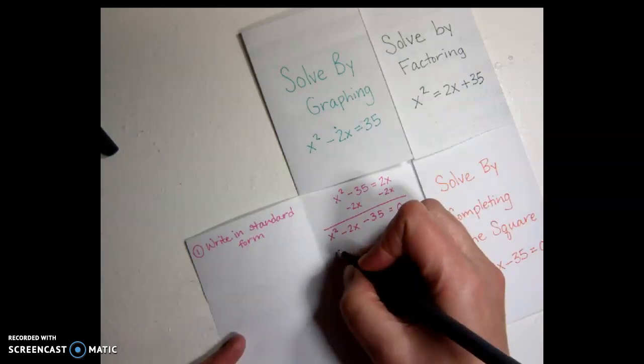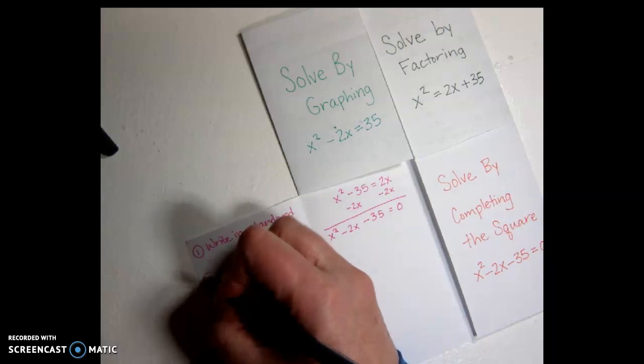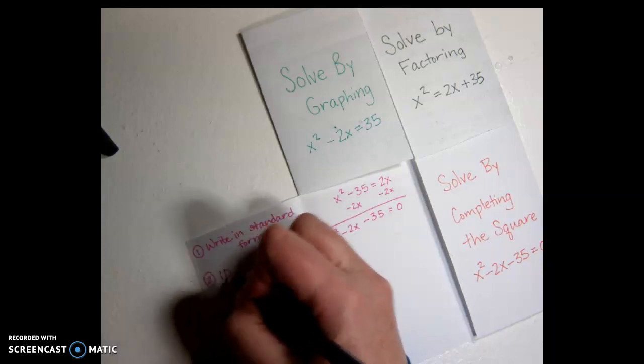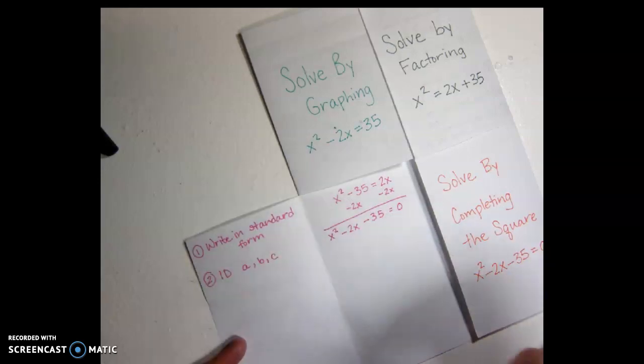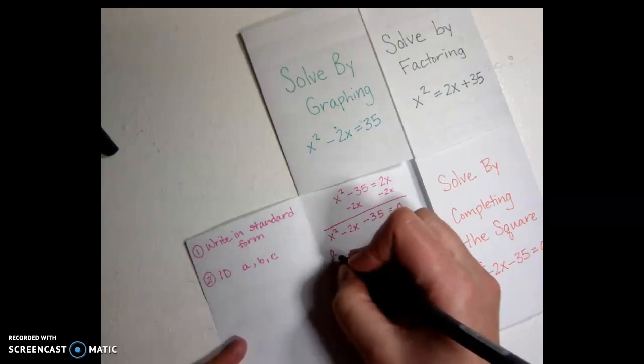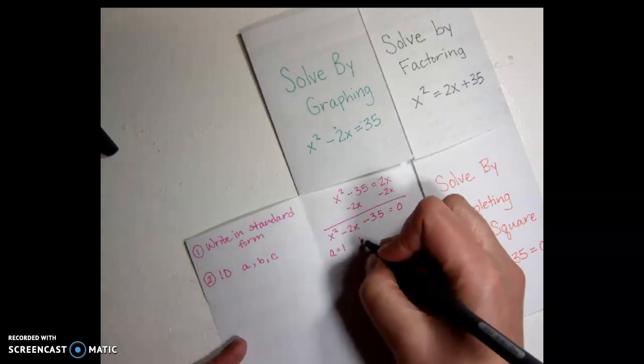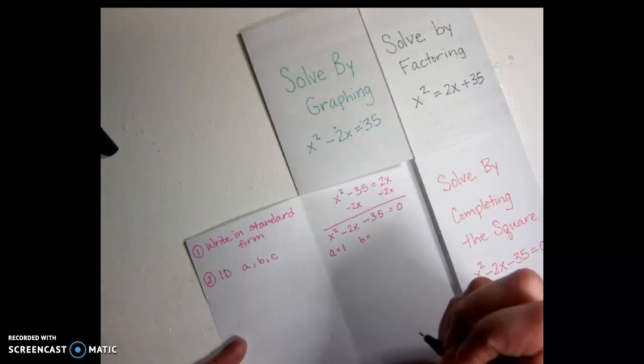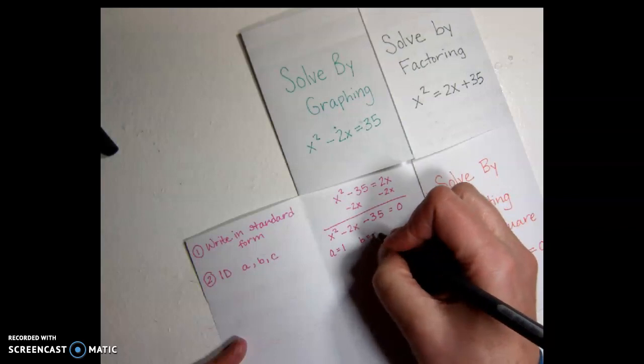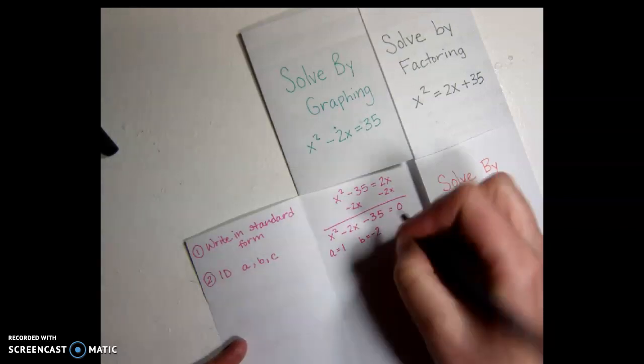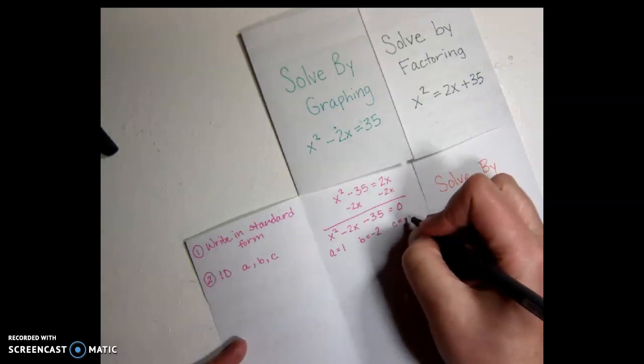So for this standard form, the next thing we're going to do is identify a, b, and c. So a is the coefficient in front of x squared, so in this case a is 1. b is the coefficient in front of x, so in this case b is negative 2. And c is negative 35.